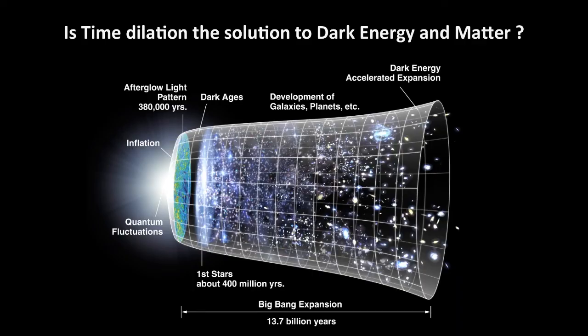Now, is time dilation the solution to dark energy and dark matter? Just after the Big Bang, matter was very close together, so the gravity forces were huge, and therefore time ran very slow as I showed before. All galaxies spread out evenly over the universe and the interacting gravity forces are very weak, so time runs much faster now. So according to logic, time must have accelerated throughout the universe over time.